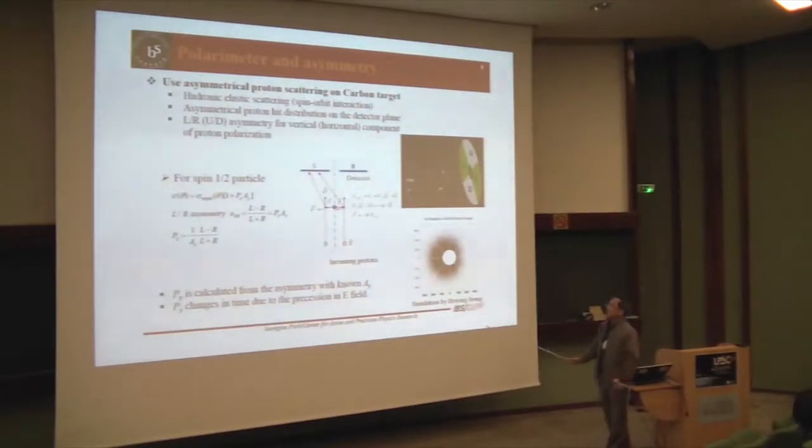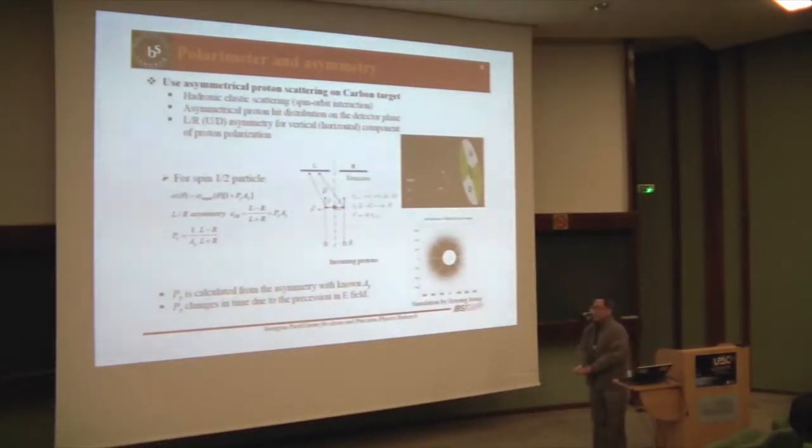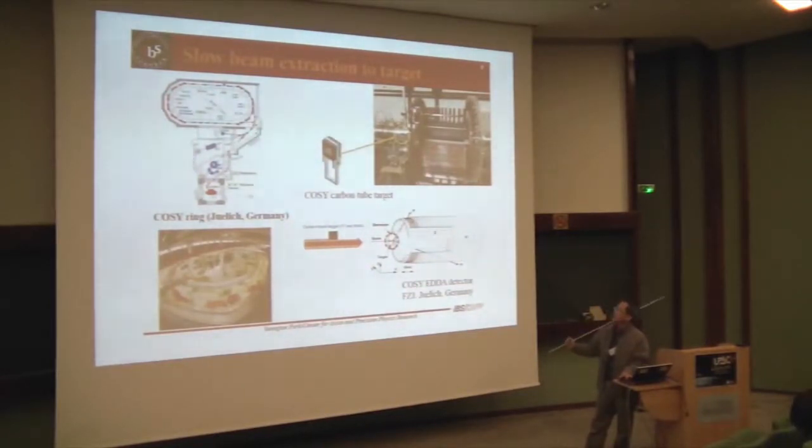So polarimeter is used to measure the precession rate. If you have this kind of a hadronic particle case, if you scatter the polarized particle from the carbon materials, let's say carbon case, then if you, let's assume that you have polarized particle, the target is there. It will scatter. Then scatters to the left-hand side more particles scattered than the right-hand side. So from this asymmetry, this asymmetry, you can calculate the vertical component of the polarization. That gives you the time variation of the polarization.